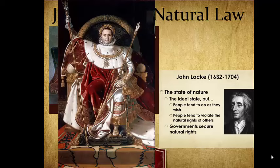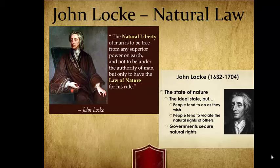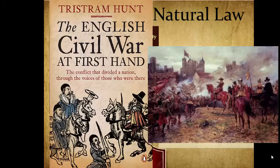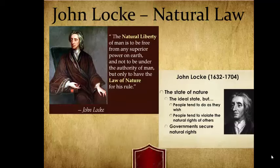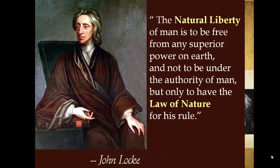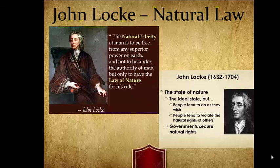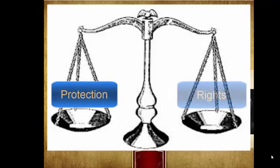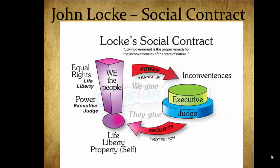Locke knew from firsthand experience what happens when a king has too much power. He lived in a time when Great Britain was struggling over how much power the king should have. His father fought in the English Civil War between Parliament and the king — against the king. So while Locke spoke about the need for government to protect our rights, he also knew we needed protection from government itself. His quote: 'The natural liberty of man is to be free from any superior power on earth… but only to have the law of nature for his rule.'